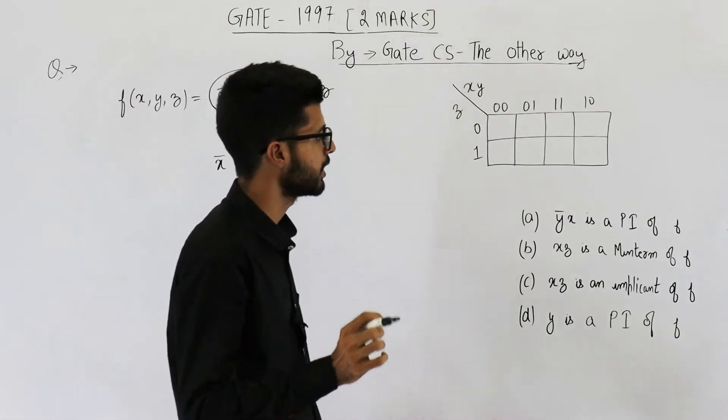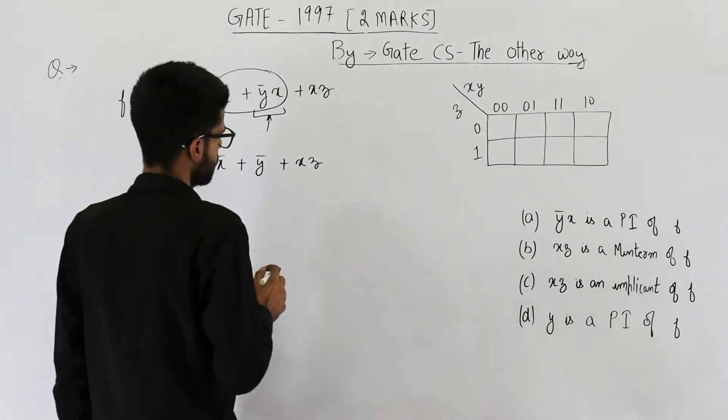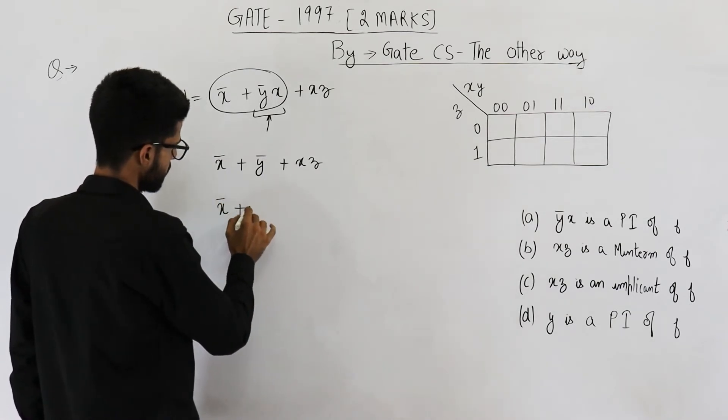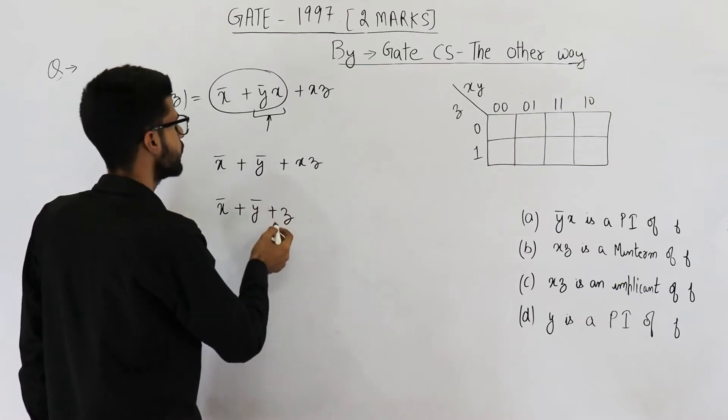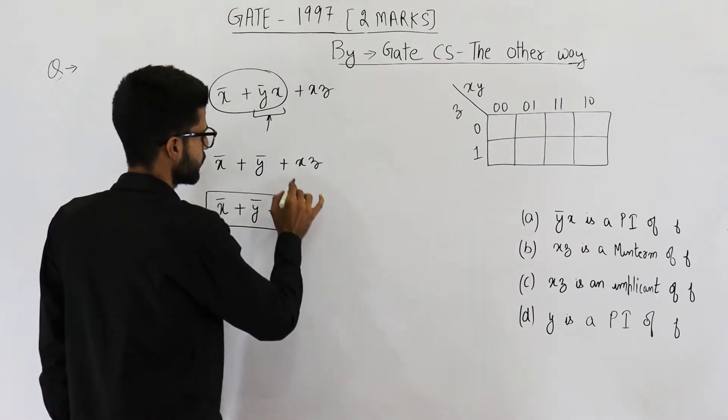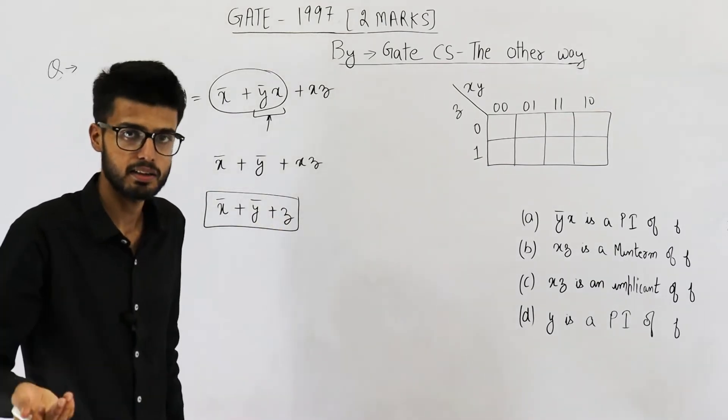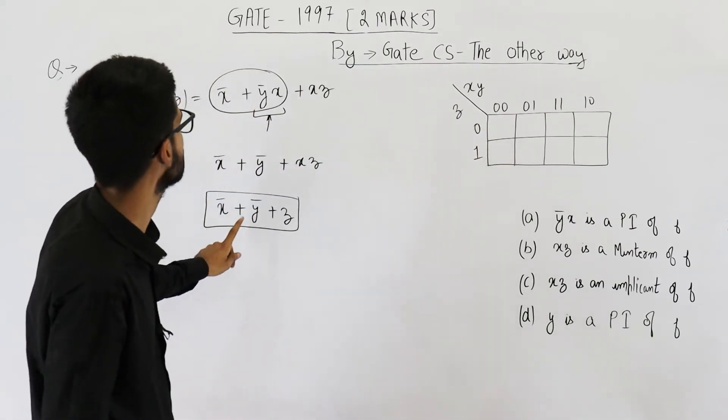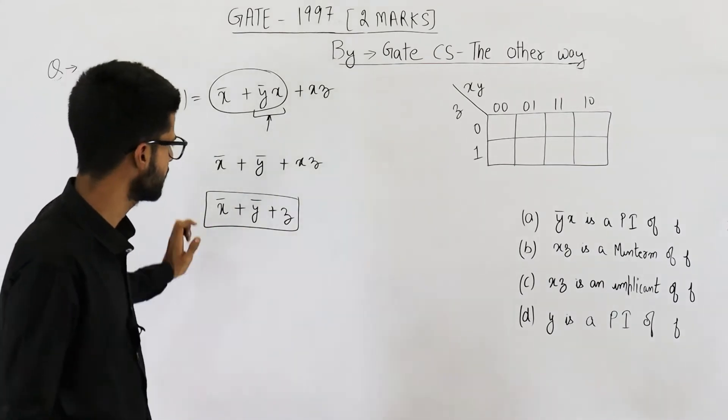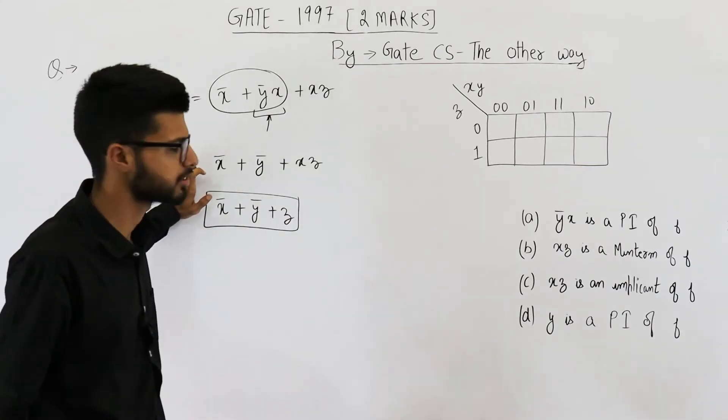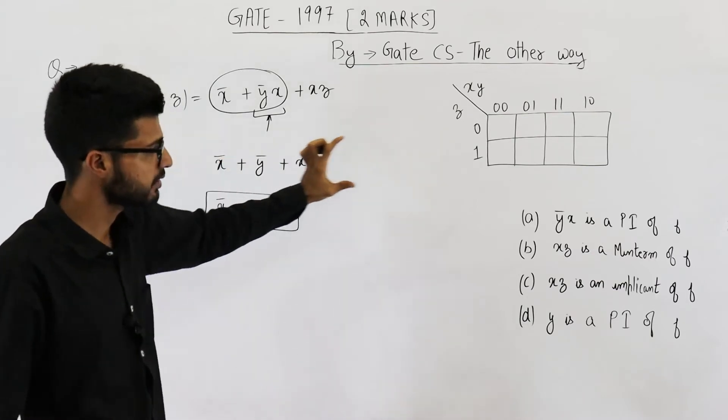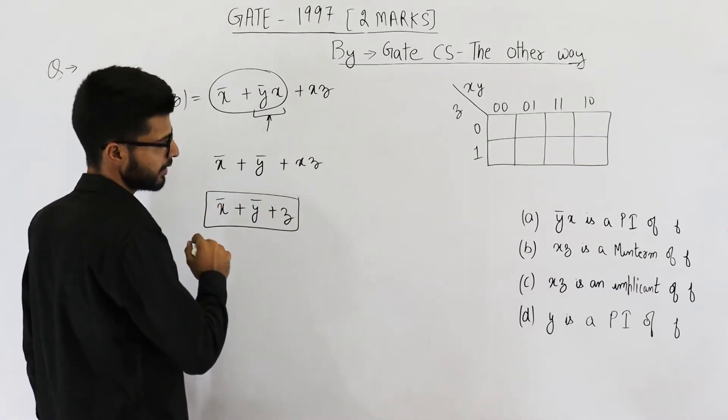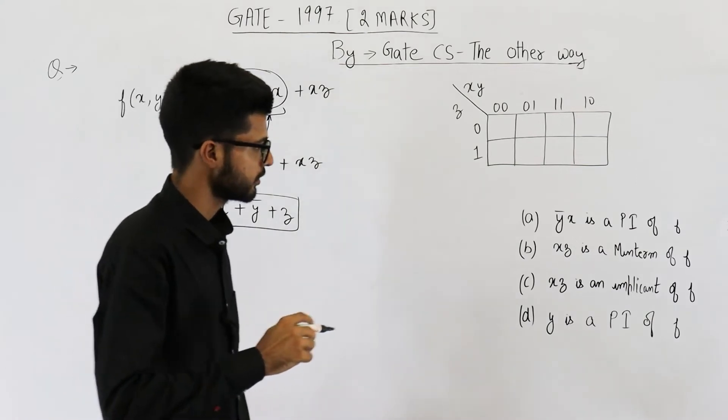So option A is wrong. It's not a prime implicant of f. Next you can see it could be further minimized to x bar plus y bar plus z. So this is the minimal expression. Anyways, you can't just directly declare that this one is minimal. You always have to draw the K-map for declaring any expression to be minimal. But with experience, you can just simply get to know if an expression is minimal or not. Anyways, K-map is the best method. We'll also go with the K-map. First of all, let's see a few things. So this one is surely wrong.